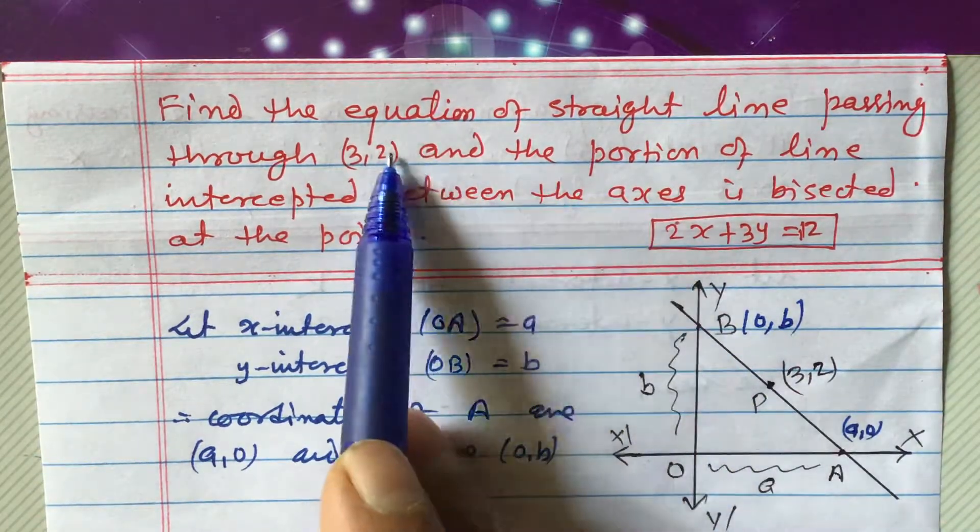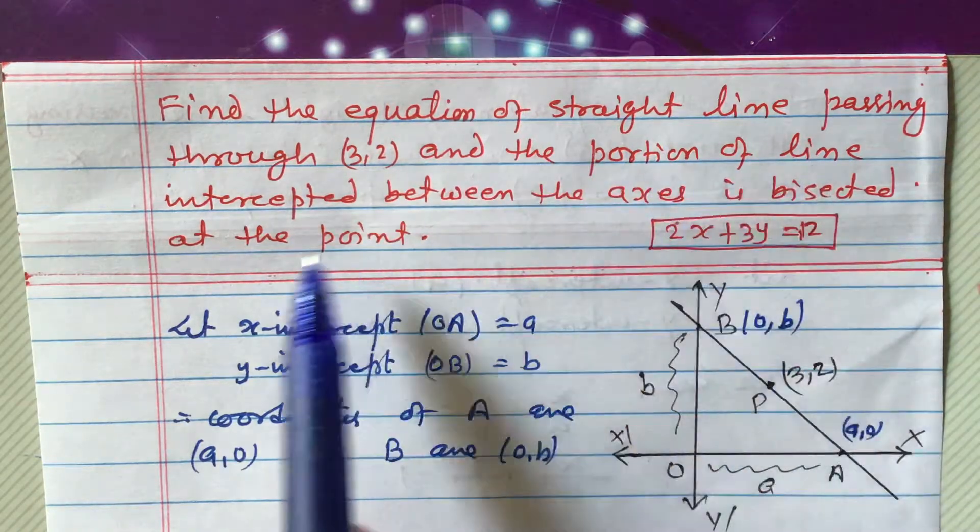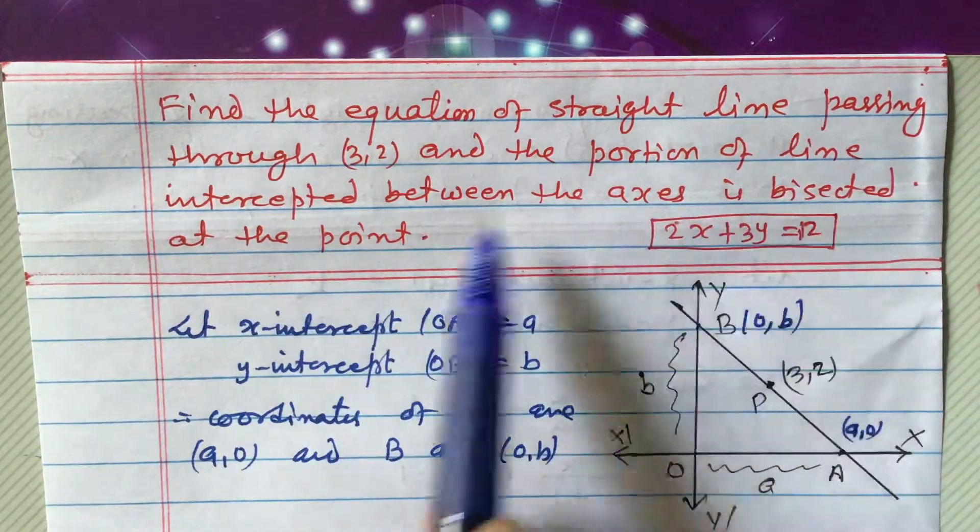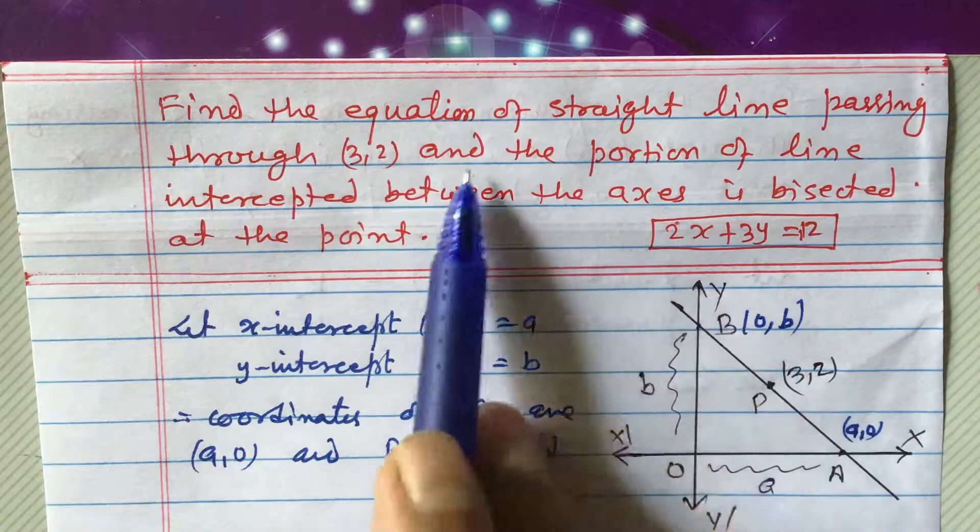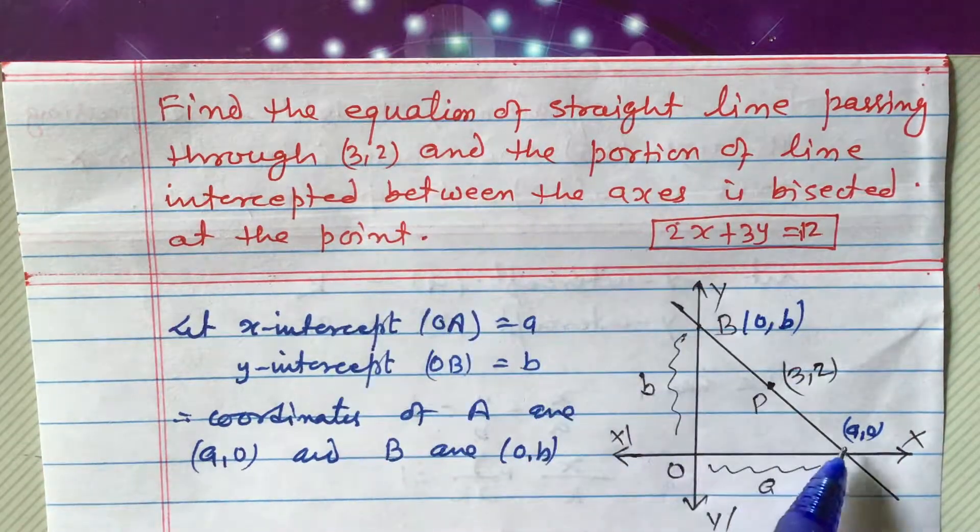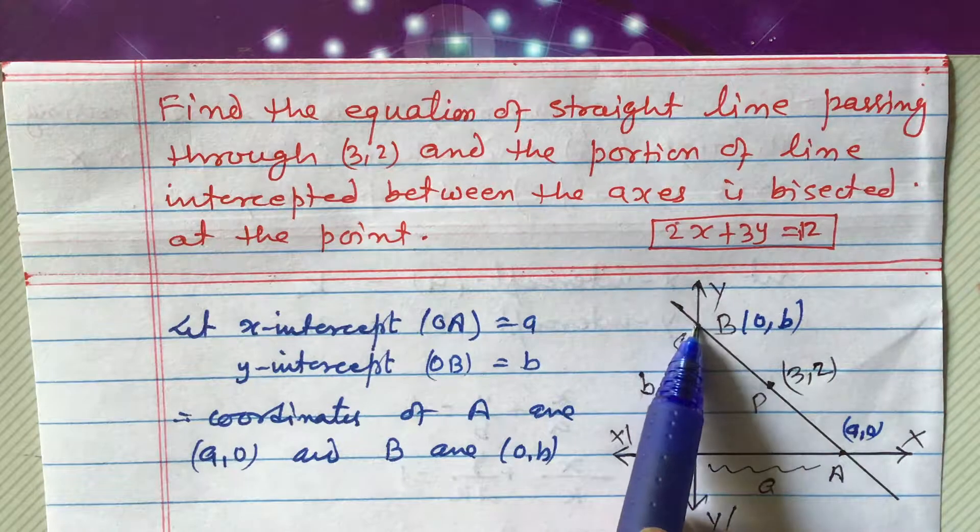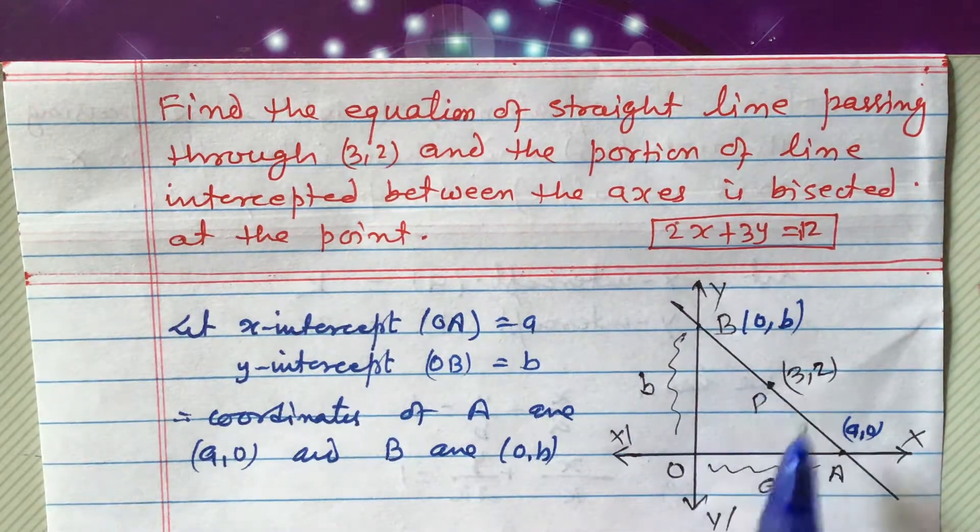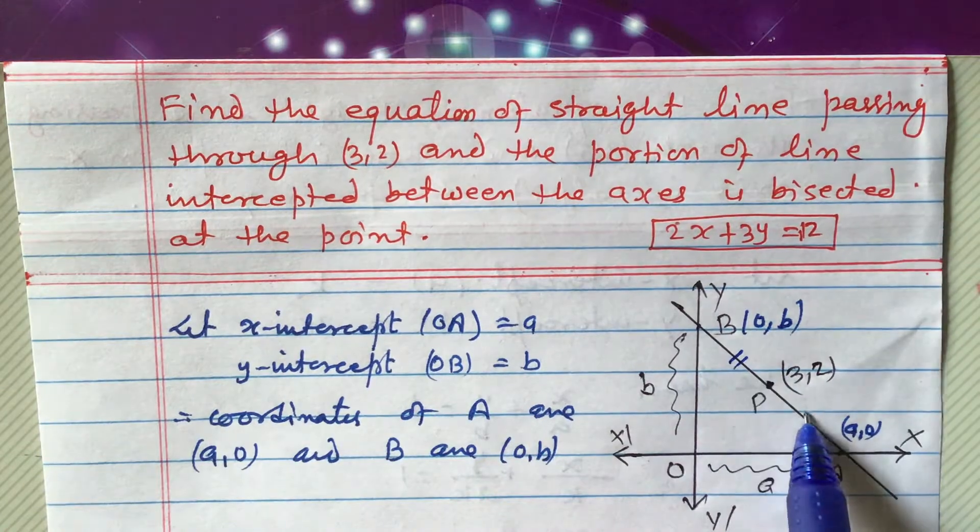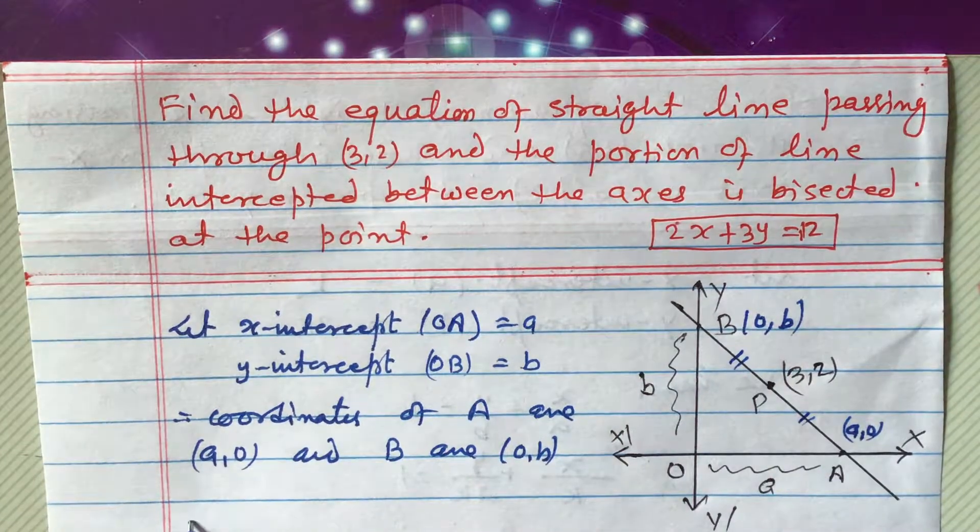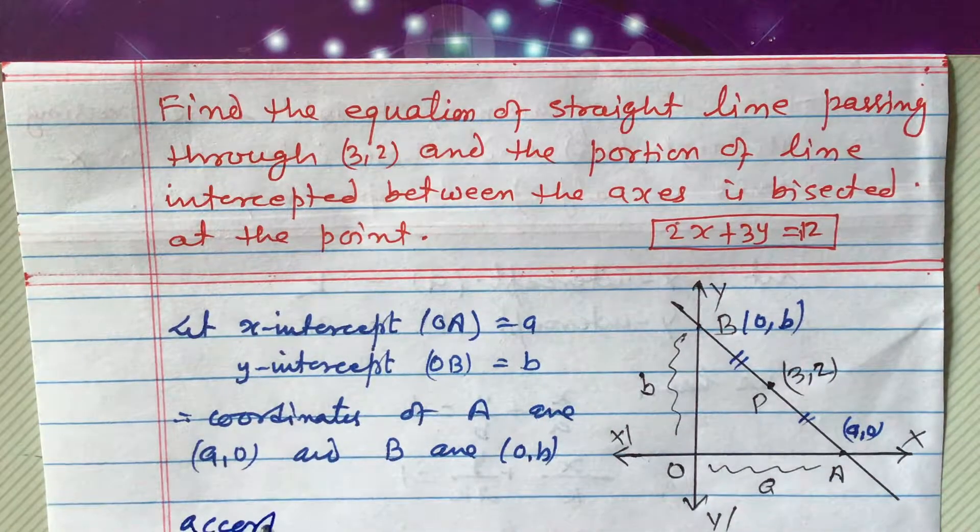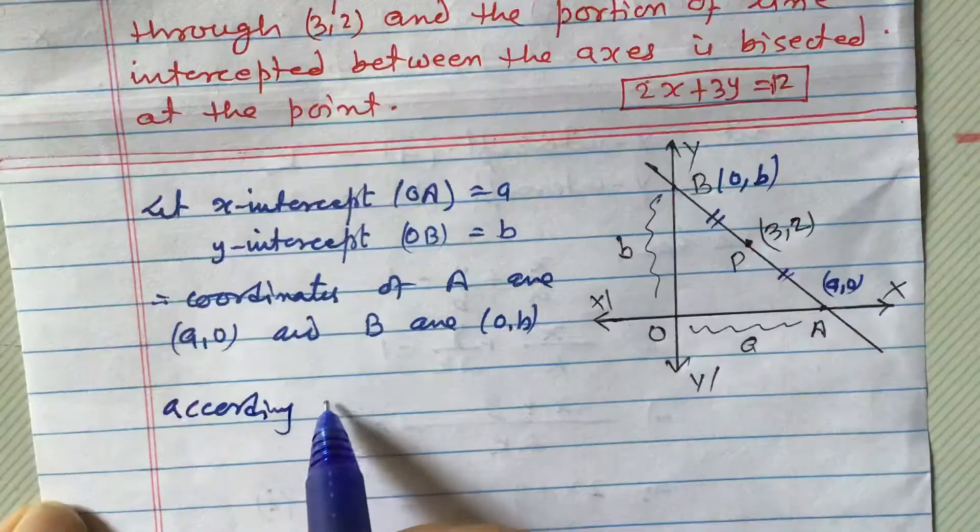Now, it is given that the portion of the line intercepted between the axis is bisected at the point. The portion of the line intercepted between the axis means from A to B. These two are the axis, the part of the line between the axis. This is bisected at this point means now this and this will be equal. So, according to question, according to question,